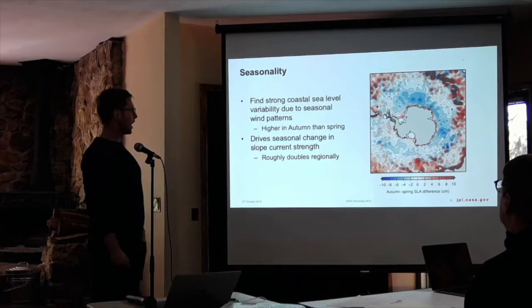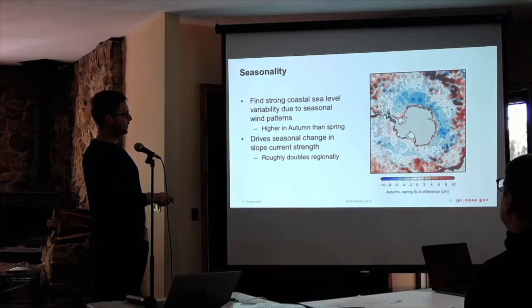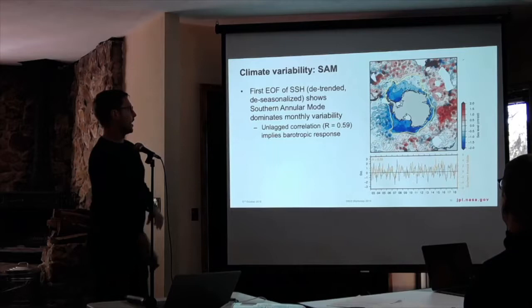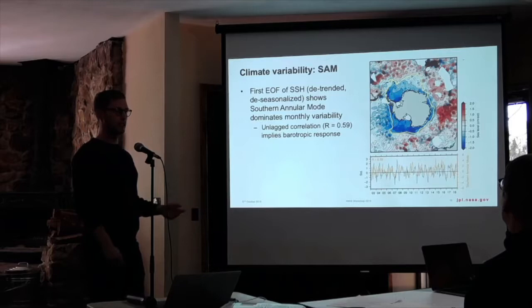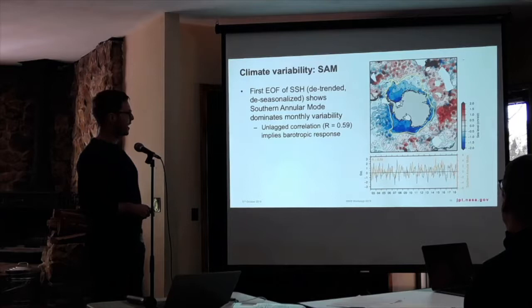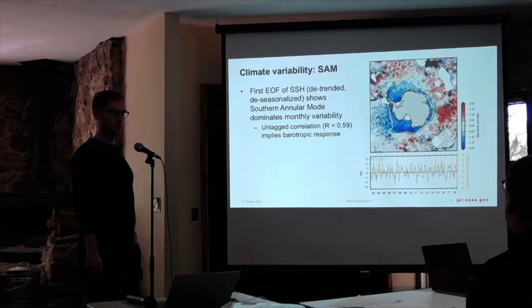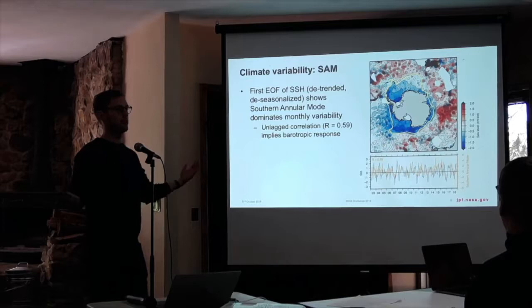There is also still a seasonal signal in the Amundsen Sea / West Antarctica segment. There's significant climate-driven variability — this is the first empirical orthogonal function. We detrended the time series, removed the seasonal cycle, and did an EOF analysis. This is basically what the SAM does to sea level on a month-to-month timescale. The gray time series is the principal component, and overlaid is the SAM index. We get a correlation of about 0.6 between those two time series.